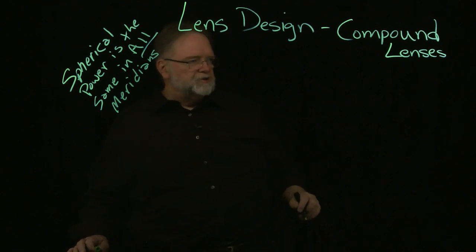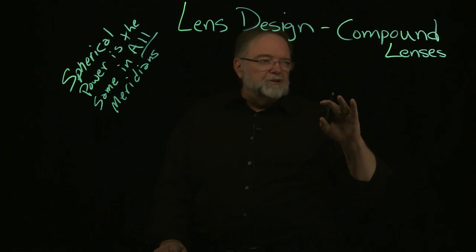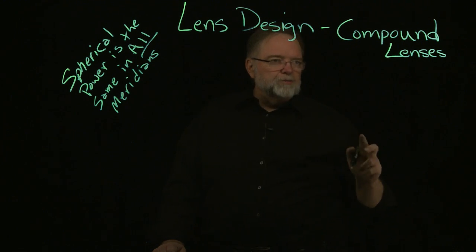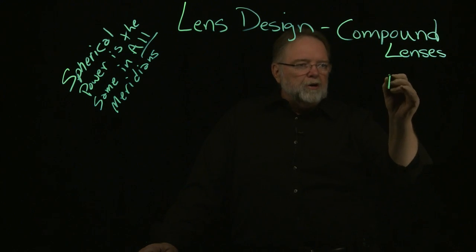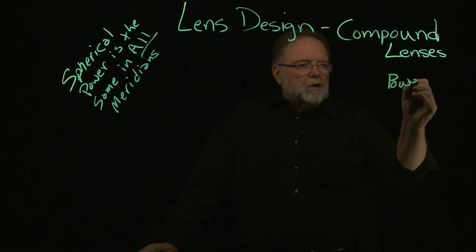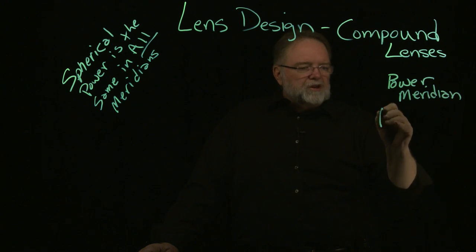In a compound lens, it's exactly the opposite. The power is different in every meridian. So there's two principal meridians in a compound lens. One is called the power meridian and one is called the axis.